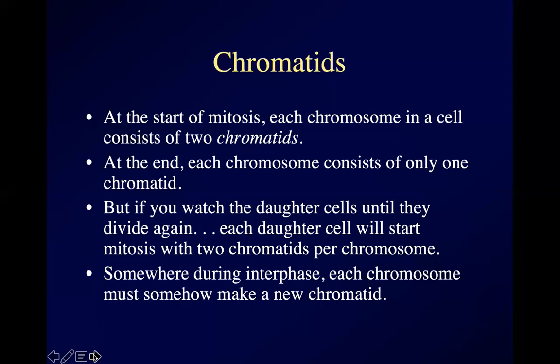When we can see chromosomes — when they become visible in prophase — each chromosome consists of two chromatids. At the end of the process, at telophase, where we lose the ability to see chromosomes, each one consists of one chromatid.